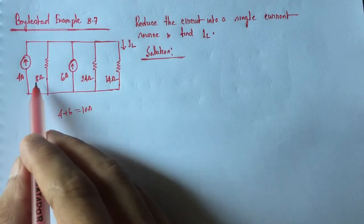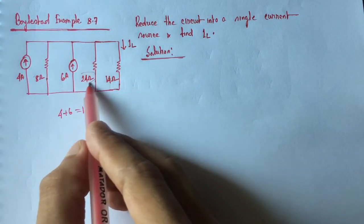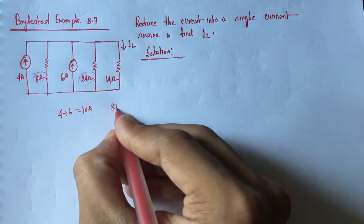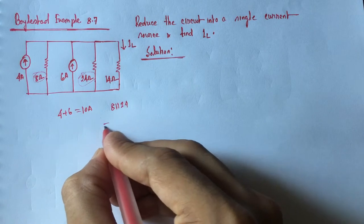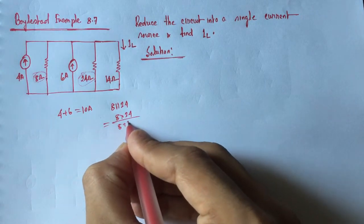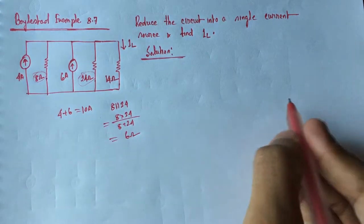Now 8 ohm and 24 ohm resistance are in parallel. So if we take the equivalent resistance of 8 and 24 ohm, it will become as 8 plus 24, that is 6 ohm.